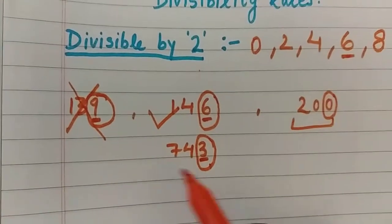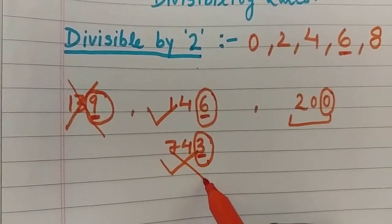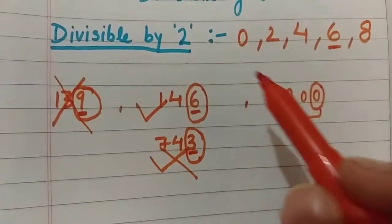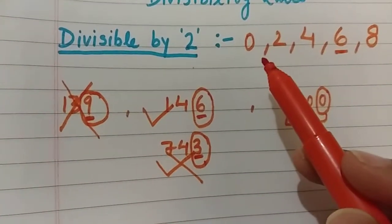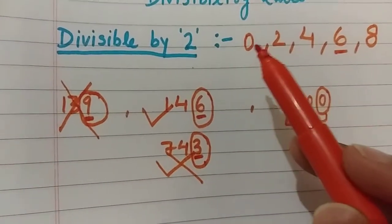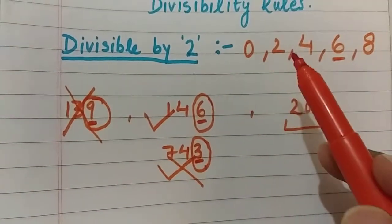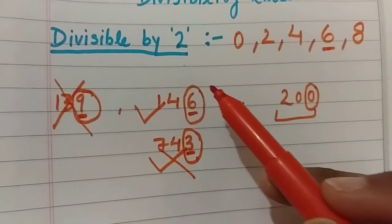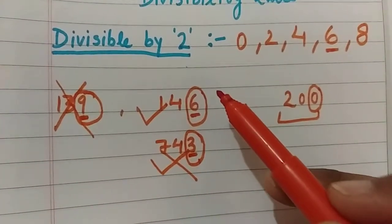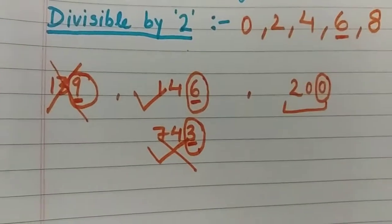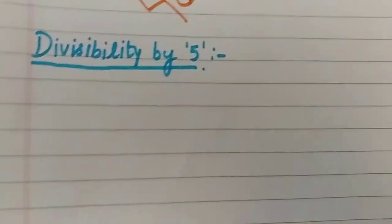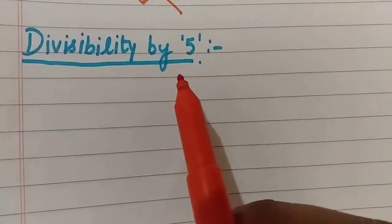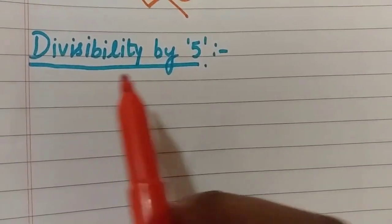So that is the divisibility rule of 2 — a number is divisible by 2 only when its ones place digit is 0, 2, 4, 6, or 8. Now we will do divisibility by 5.